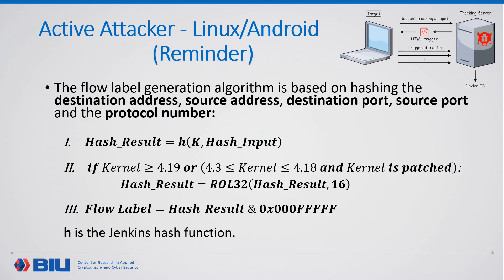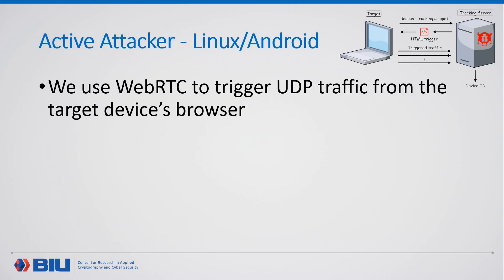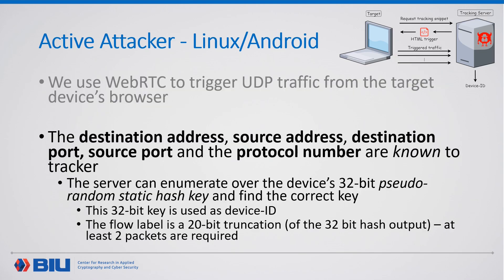Now let's see the active attacker for Linux and Android. Here is a reminder of how the flow label is generated on these platforms. Remember that the key of the hash function is just 32 bits, so we can just enumerate over all possible keys. The tracker triggers UDP traffic using WebRTC. The five-tuple is known to the tracker, so the tracker can mimic the flow label algorithm and enumerate over the 32-bit key. Once the key is found, this key would be the device ID. Note that because the flow label is a 20-bit truncation, at least two packets are required.